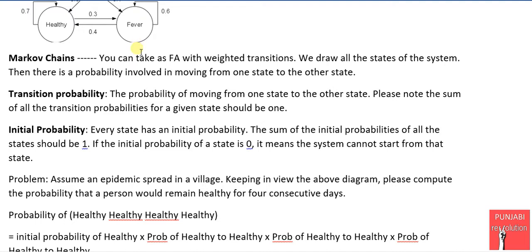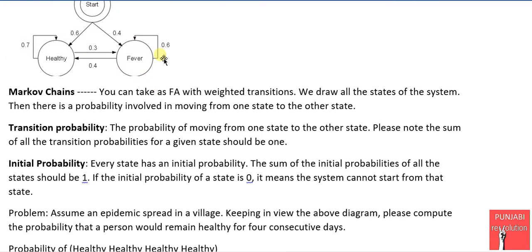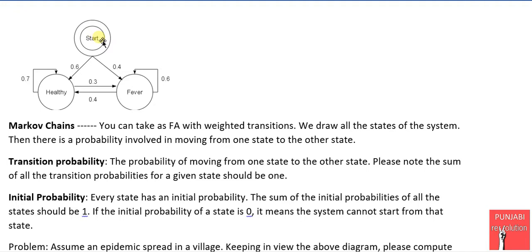That was about transition probabilities. The next very important concept is the initial probability. Suppose we have a system with two states and we need to decide which would be the starting state. To decide the starting state, we define the initial probability. In the start, the chances of being healthy are 60 percent, that is 0.6, and the chances of having fever are 40 percent, that is 0.4.